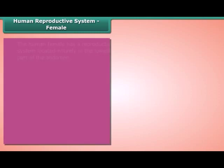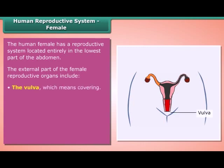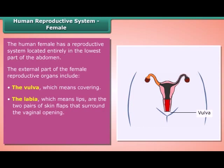Human reproductive system — female. The human female has a reproductive system located entirely in the lowest part of the abdomen. The external part of the female reproductive organs includes the vulva, which means covering, and the labia, which means lips — the two pairs of skin flaps that surround the vaginal opening.